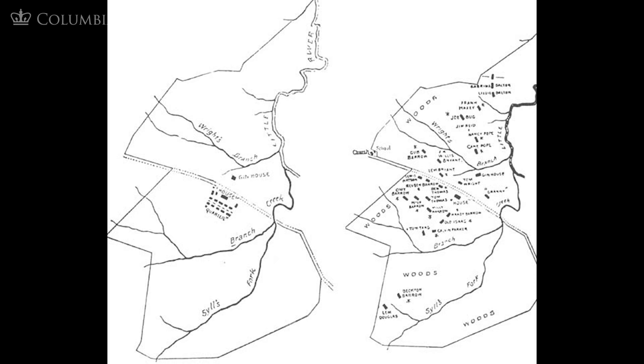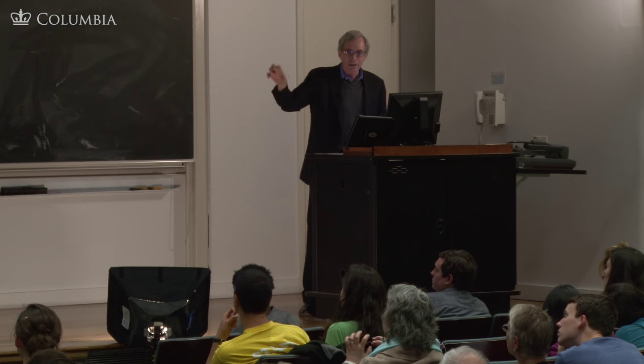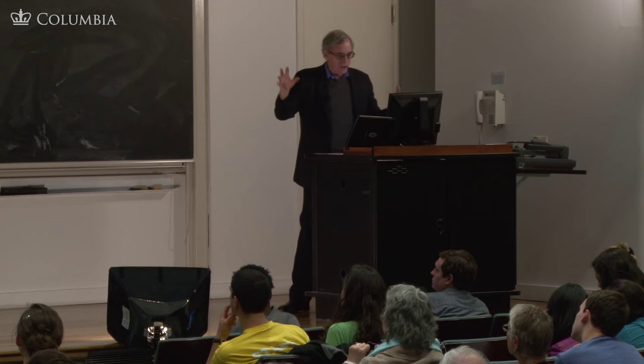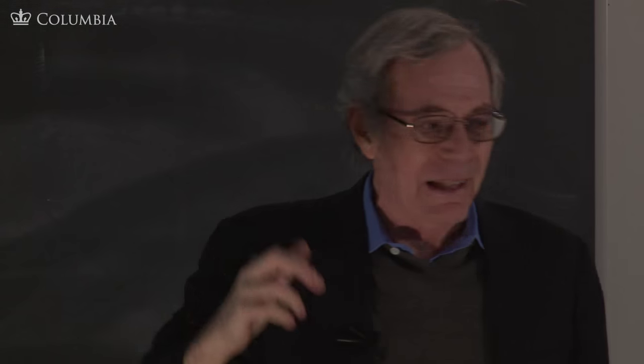Look at what it looks like in 1880. These families are now scattered over the length and breadth of the plantation. Each family has its own little plot of land which it is tilling. The slave community has been broken up into these family farms. They're not totally isolated, but they are separate. And there is a school now on the plantation, which you wouldn't have had before, and they've also built their own church.